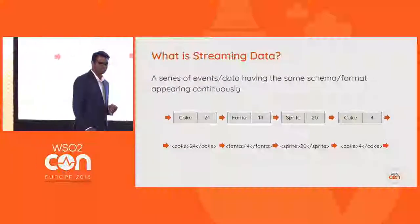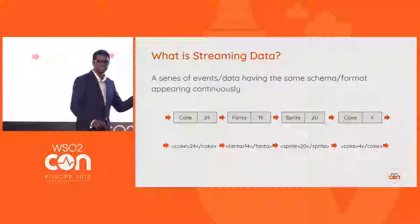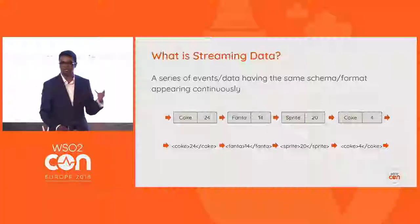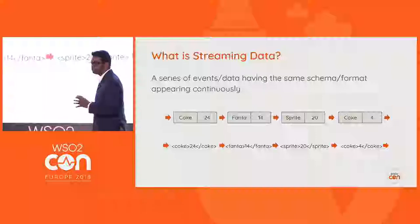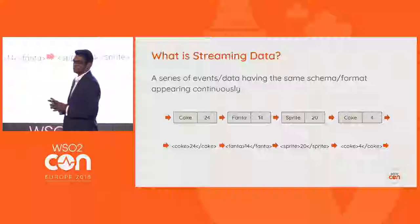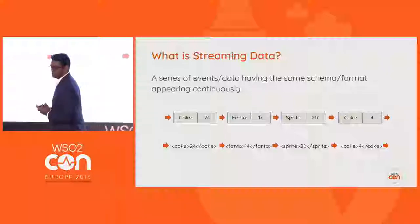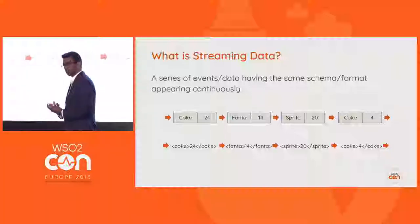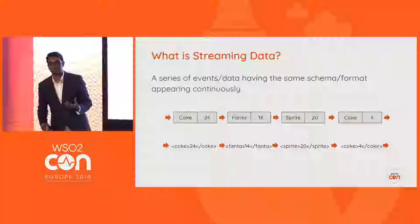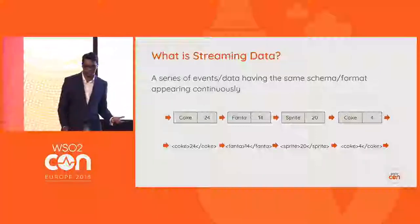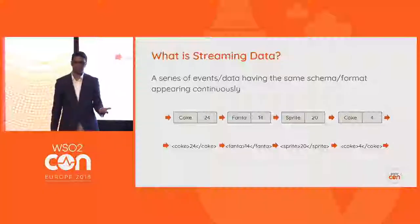So what is streaming data? Streaming data is a series of events coming into the system having a common format. The format is not going to change much, but the data is going to change. That is usually what you call streaming data or streaming events.